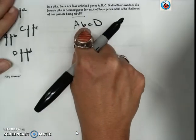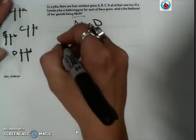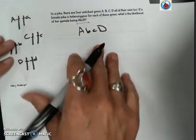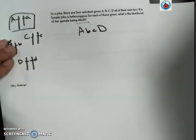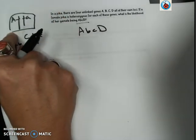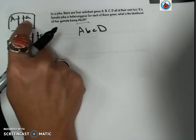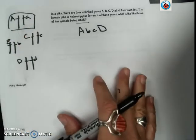So if we break it down one trait at a time and we look at just these A alleles, we can see that 50% of the gametes will have a dominant allele and 50% of the gametes will have a recessive allele.